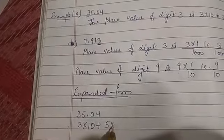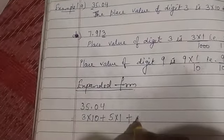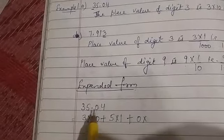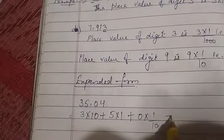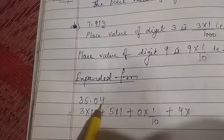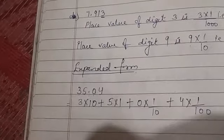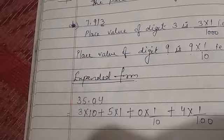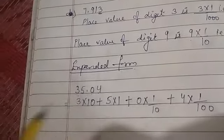Plus this is 5 multiply 1, plus 0 multiply - which place is it after decimal? Just next, tenth. 1 by 10, plus 4 multiply - which place is this? Hundredth. 4 multiply 1 by 100. Clear students, so this is the expanded form of the given value.